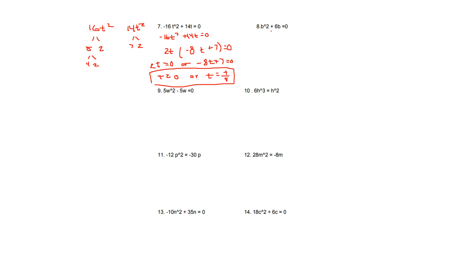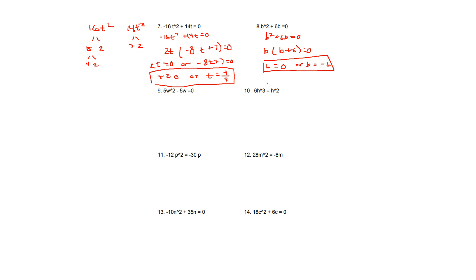For number 8, we have b squared plus 6b equals 0. You can take out a b, so it becomes b times (b plus 6) equals 0. Using the zero product property, it's either b equals 0 or b equals negative 6.